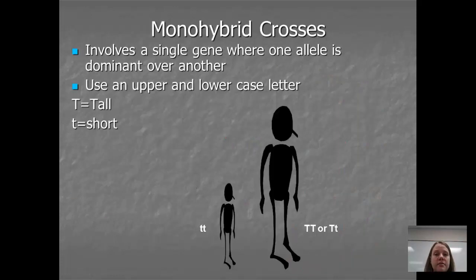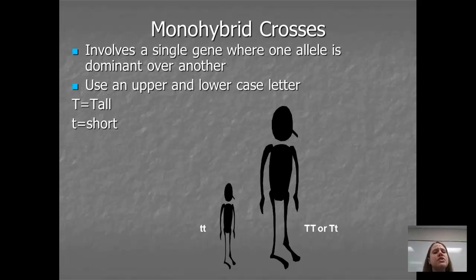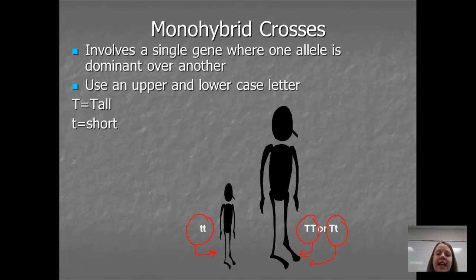Always go through these rules in your head. Monohybrid crosses are the simplest type of cross — they always involve one gene where one allele is dominant over the other, so we always use an uppercase and a lowercase letter. In reality, being tall or short involves several genes — probably upwards of 10 — but we look at one gene at a time as we first start learning genetics. A tall person could be homozygous dominant or heterozygous; either results in a tall phenotype. A short person has to be homozygous recessive, because anyone with a big T is going to be tall.